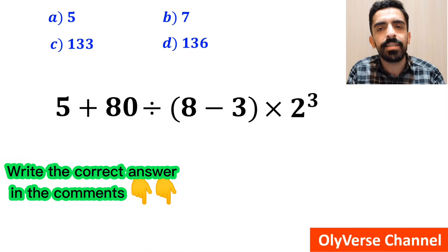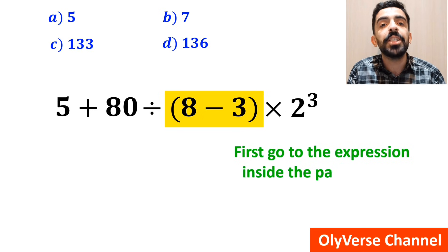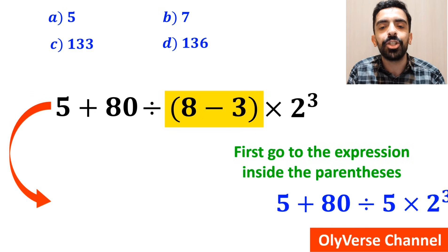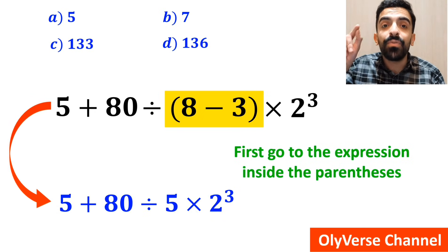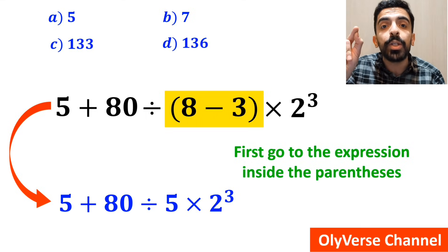Some other people, when solving this question, first go to the expression inside the parenthesis, and instead of this expression, they write 5 plus 80 divided by 5 times 2 to the power of 3.